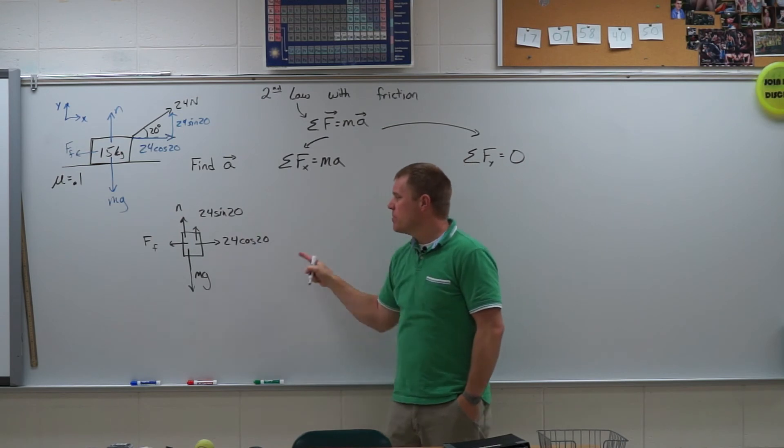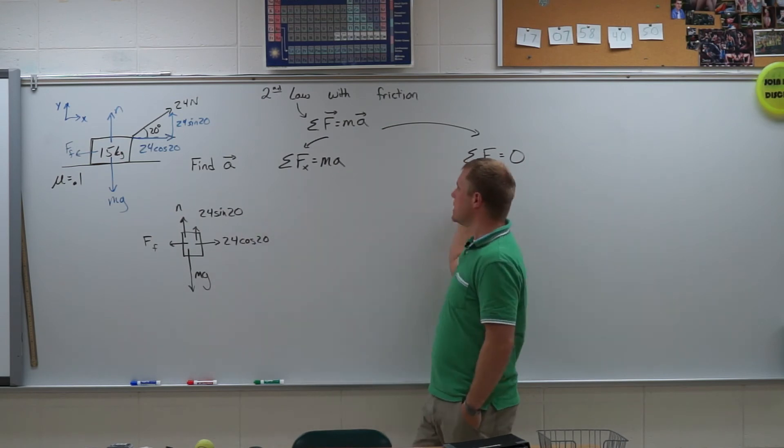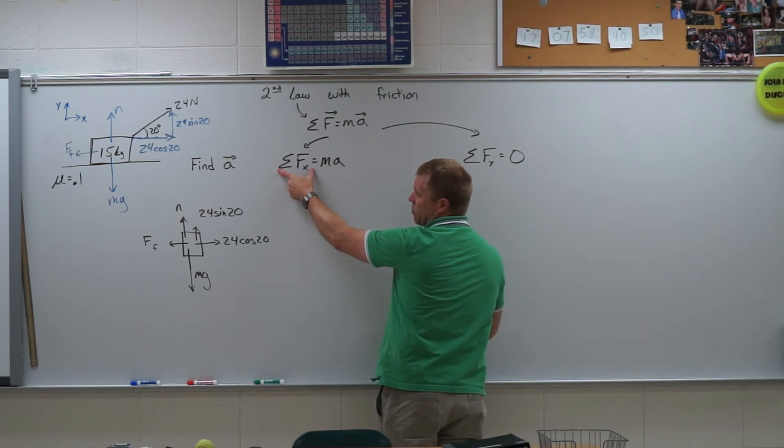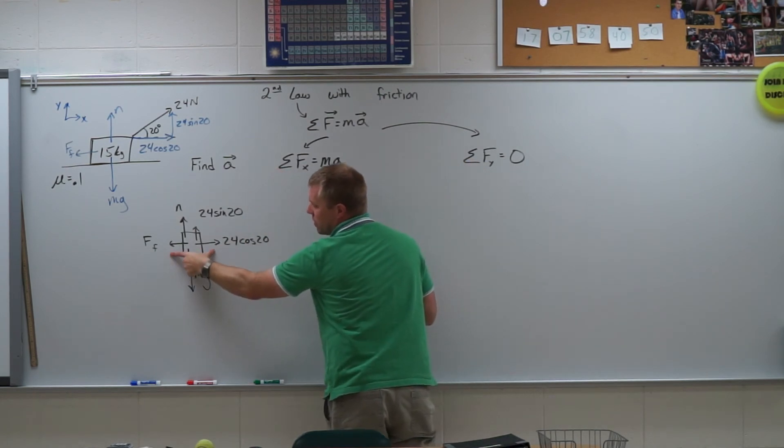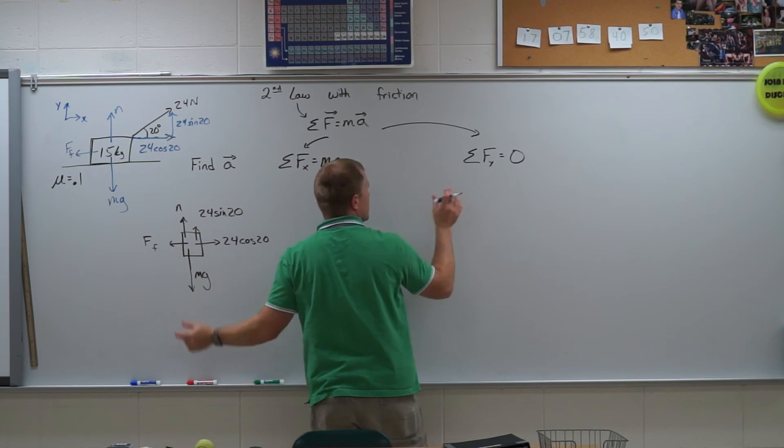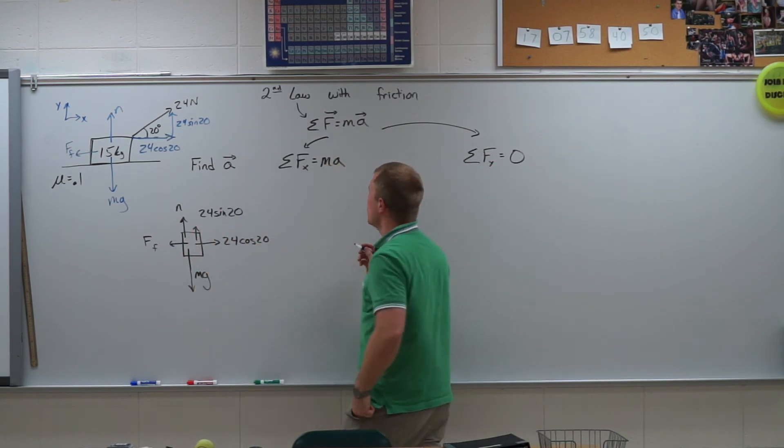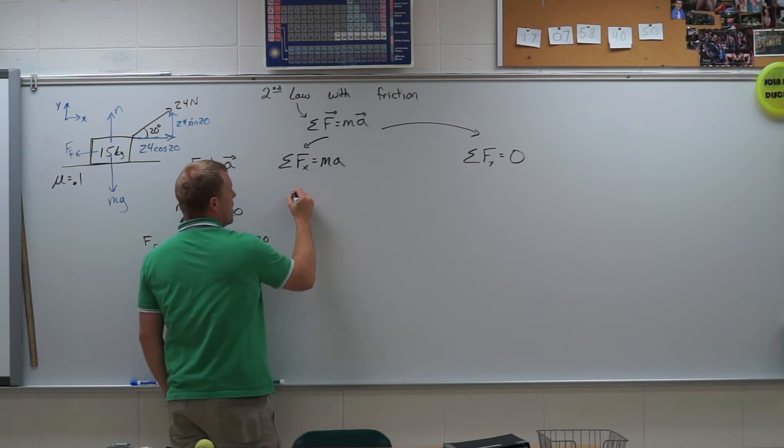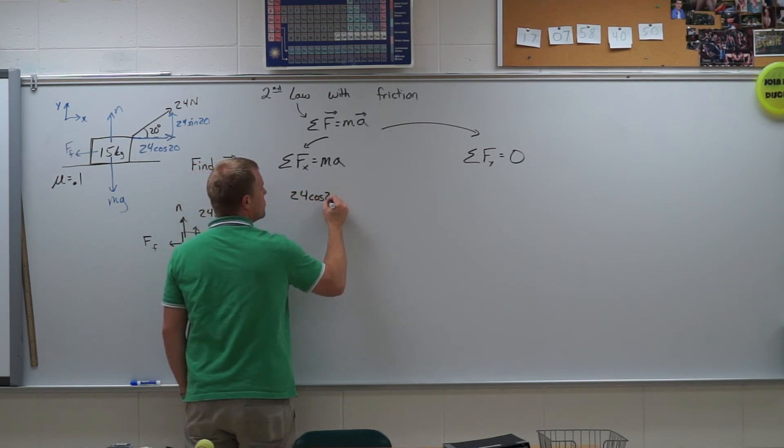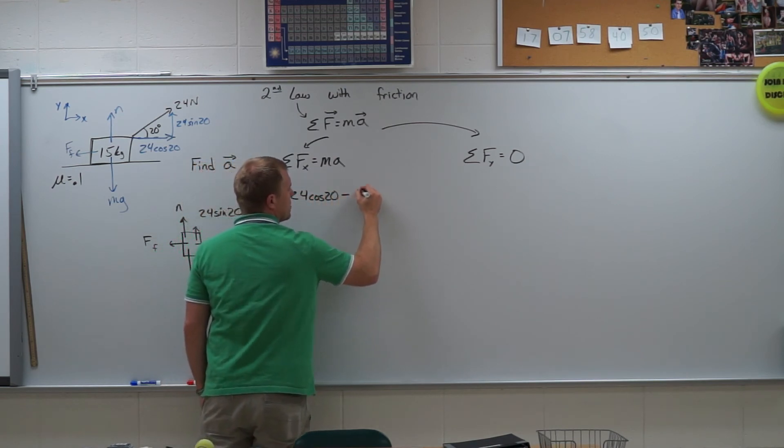Now I'm going to use my free body diagram to generate the equations. So this left half, the sum of the forces in the x direction comes from all the forces in the x. Or this sum of the forces in the y comes from all the forces in the y. So here we go, in the x direction I have 24 cosine of 20 minus the force of friction.